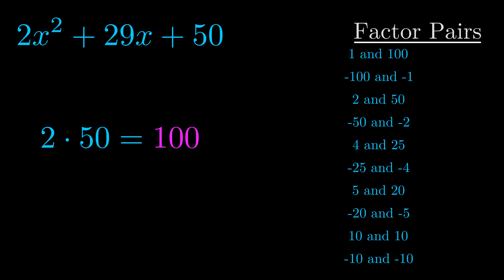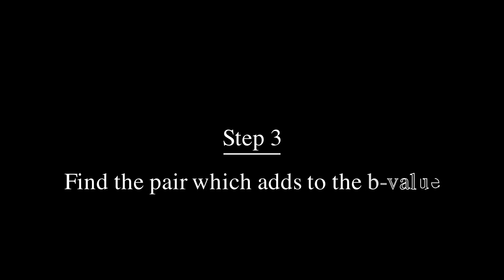Now once you have these factor pairs, the goal is to find which of these pairs adds to the b value. The b value is the coefficient on the x term.